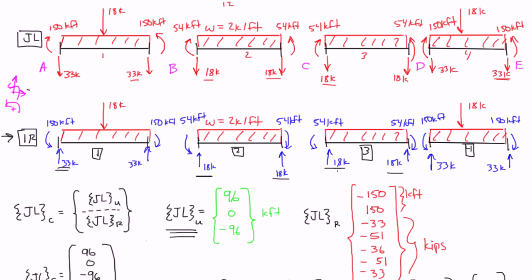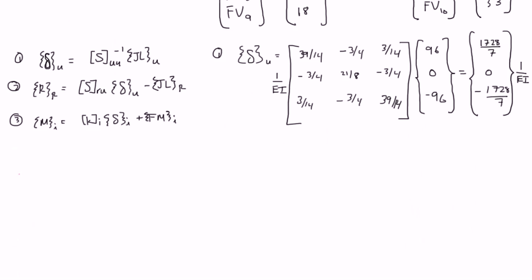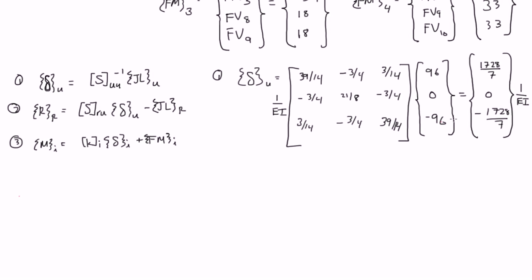Alright, welcome back. In the last video, we figured out what our unrestrained deformations were. They're right here. So we figured out what our unrestrained deformations were, and these three values that we got corresponded to the degrees of freedom. In this video, we're actually going to figure out what our restrained reactions are.